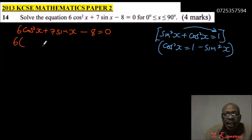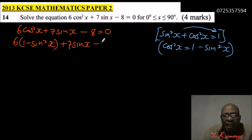So we now substitute cos²x with this one. We write 6 into bracket, in place of cos², we write 1 - sin²x. We say +7 sin x - 8 = 0. So we have now successfully removed cos.